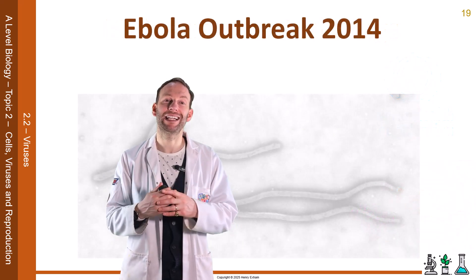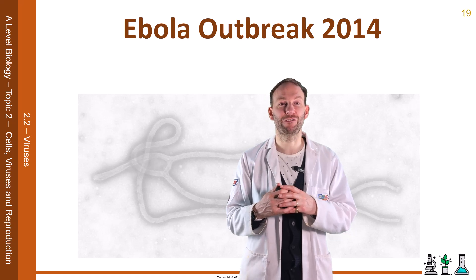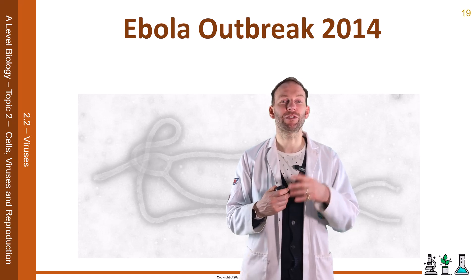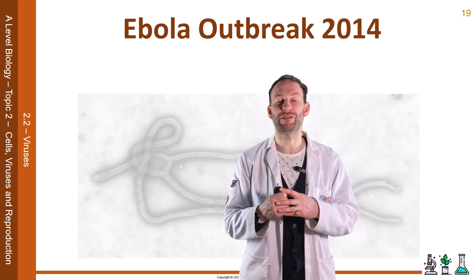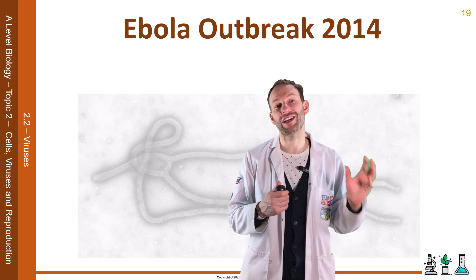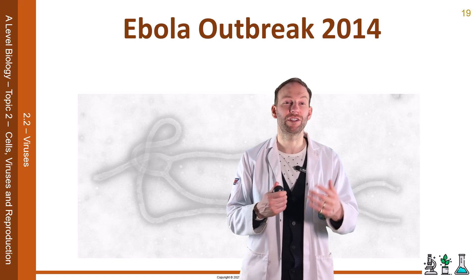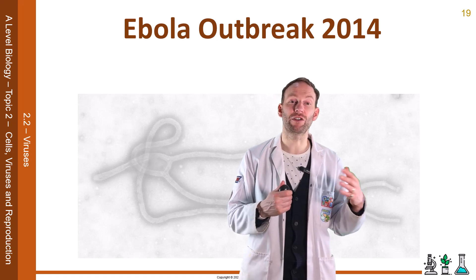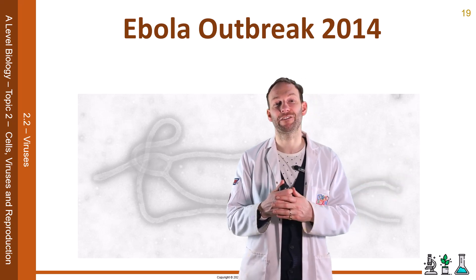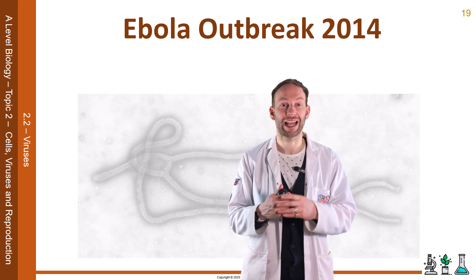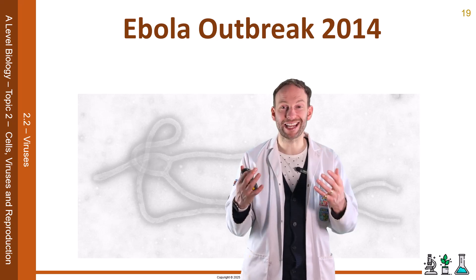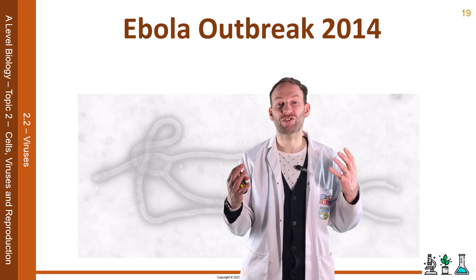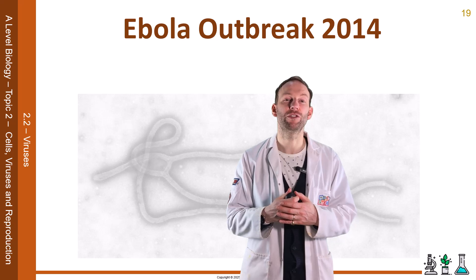An example is the Ebola outbreak of 2014. The WHO approved a drug called ZMAP. It was found that survivors of Ebola had raised levels of certain antibodies, and scientists genetically engineered tobacco plants to produce these antibodies. Because the mortality rate was so high and the drugs had been successfully trialled on monkeys, they decided to start using them. However, only a small amount was available, so only seven people were treated. The mortality rate of these patients was similar, meaning a bigger trial would need to happen before conclusions could be drawn.